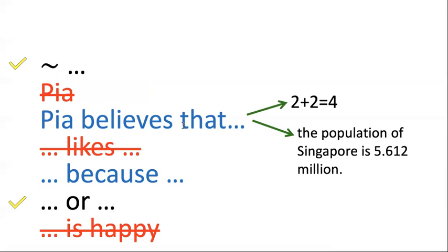The 'Pia believes' case is just like the Ian case. Here's the detail: two plus two equals four — that's true — and let's say Pia believes it. So that's a true input and the output 'Pia believes that two plus two equals four' is also true. But here's a different truth: the population of Singapore is about five and a half million people. If Pia doesn't know anything about Singapore's population, that's true but Pia doesn't believe it. The truth value of these two inputs is the same, but the truth values of the outputs differ — so it's not a truth function.